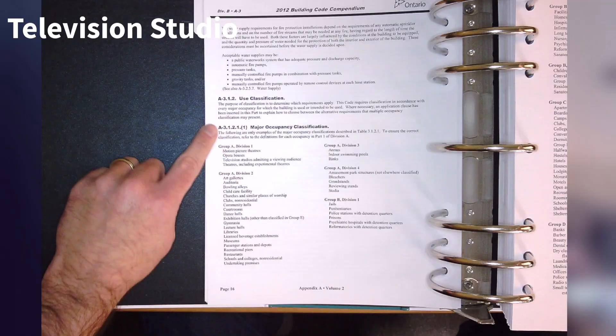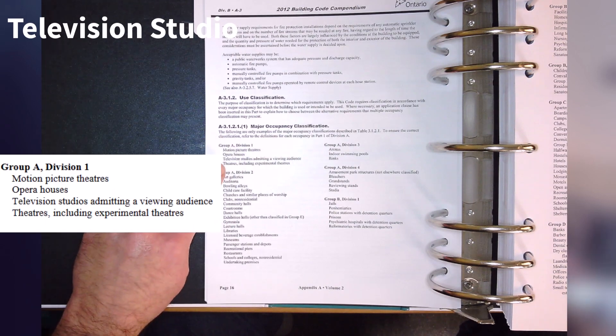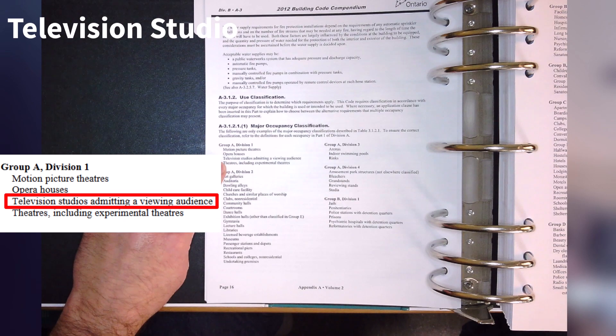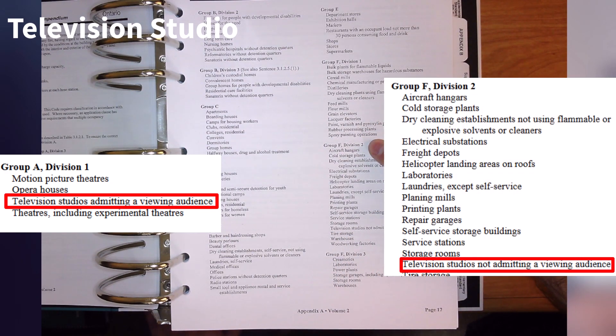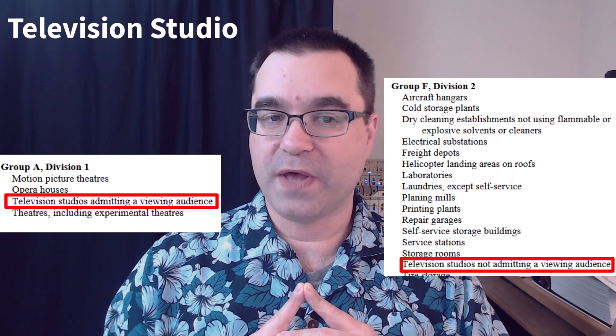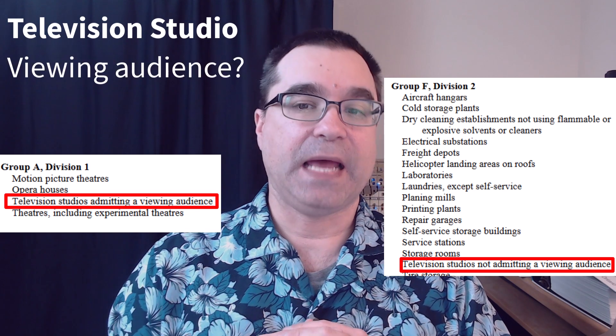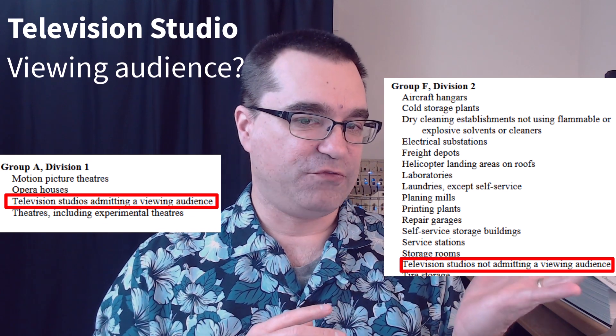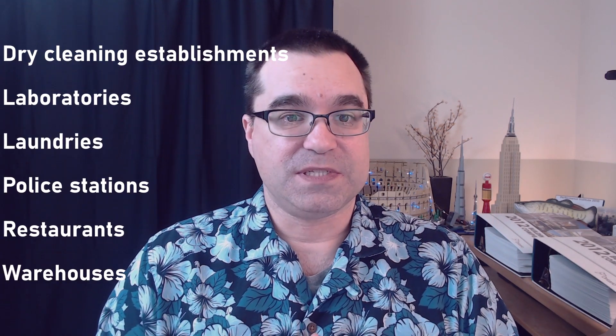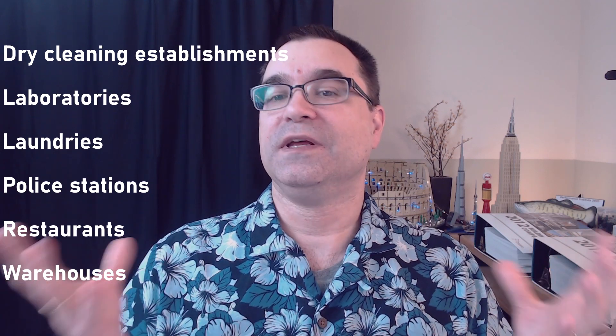Going back to the example of television studios: we found one possibility under Assembly Occupancy A1, but we don't stop there. We check all other occupancies all the way to F3, where we would also find television studios listed under Industrial Occupancy F2. So which one do you pick? You first have to find out whether the television studio you're analyzing allows a viewing audience. If yes, it's A1; if no, it's F2.